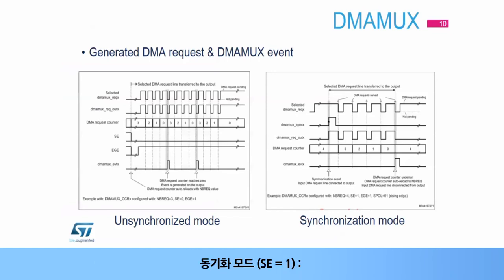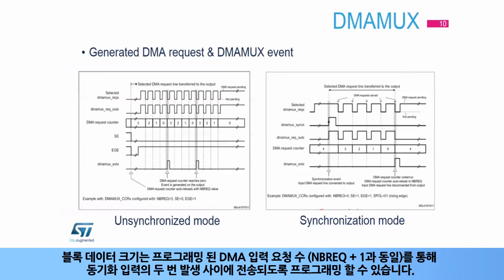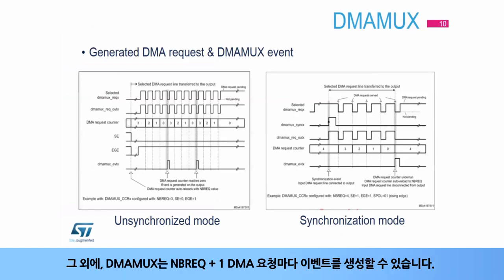In synchronization mode (SE = 1), DMA MUX is configured to synchronize a DMA or block transfer request upon the reception of each hardware synchronization event. The block data size is programmable via the programmed number of DMA input requests equal to NBREQ + 1, to be transferred between two occurrences of the synchronization input. On top of that, DMA MUX can be enabled for generating an event every NBREQ + 1 DMA requests.